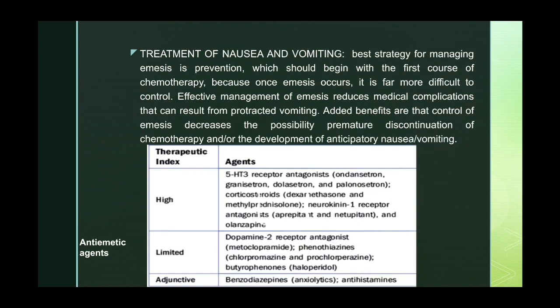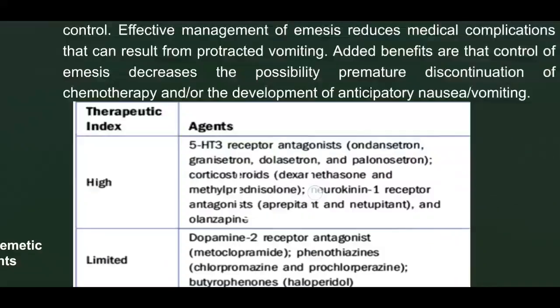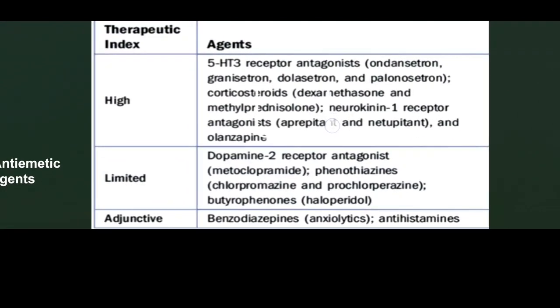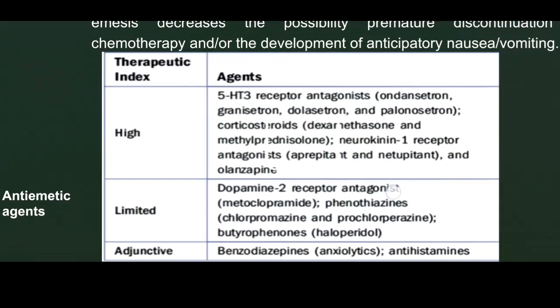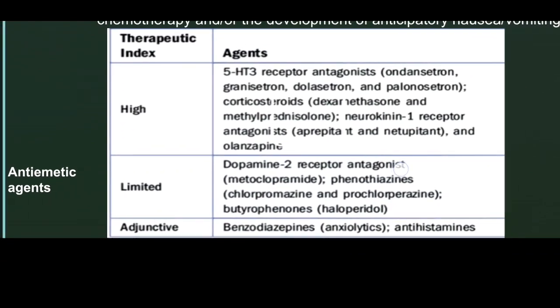Treatment of nausea and vomiting includes specific anti-emetic pre-medication. The most important drugs are 5-HT3 receptor antagonists like ondansetron, granisetron, and dolasetron. A very important addition is the neurokinin-1 receptor antagonist aprepitant, and also olanzapine. These are used as high therapeutic index agents. Drugs with limited therapeutic index include dopamine D2 receptor antagonists like metoclopramide and phenothiazines. Adjuvant drugs like benzodiazepines and antihistamines can also be used.